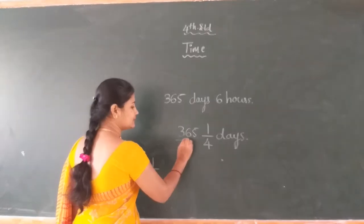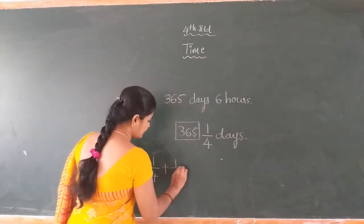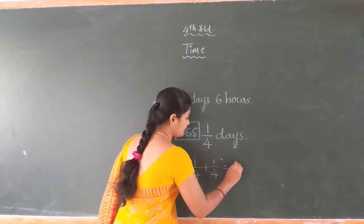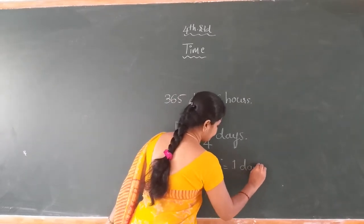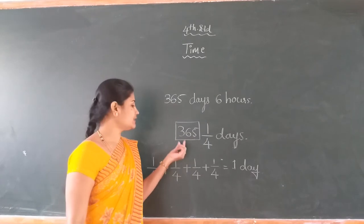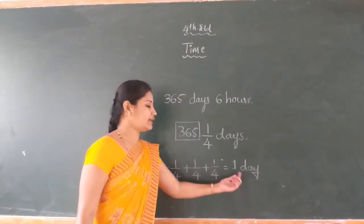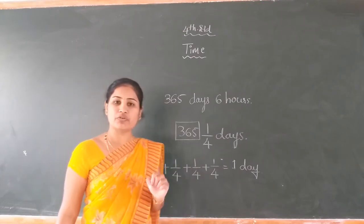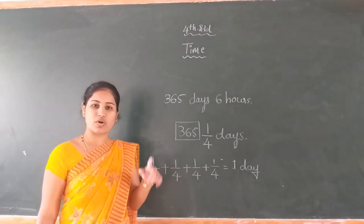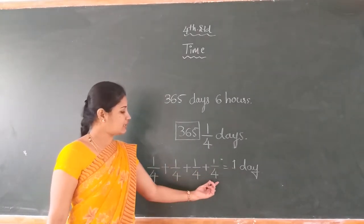We consider only 365 days present in 1 year. The remaining 1/4 is completely added — 4 times it will become 1 day. We consider only the 1 year having 365 days. The remaining 1/4 is added 4 times, and you will get 1 day. Therefore, every 4 years we can add this 1 day, because the remaining 1/4 is added 4 times for 4 years.